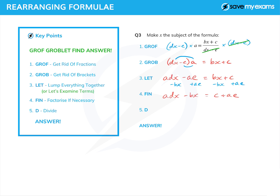Now this is where 'factorise if necessary' comes in, because I have two terms with x. This often seems to cause a problem, but there is a common factor of x. If I take that common factor out — and this is simple factorisation, there is a tutorial on it if you're not sure — I get x times (ad minus b), and that's equal to c plus ae. Let's just check: x times ad is adx, and x times minus b is minus bx. So my factorisation does work, because if I multiply it out I get the right thing.